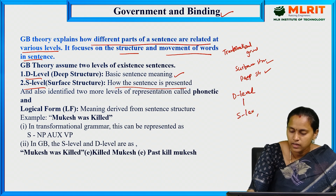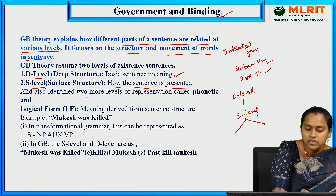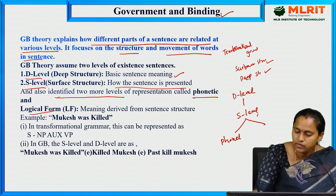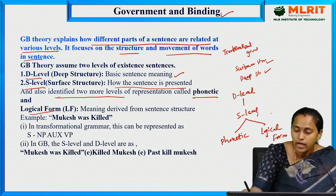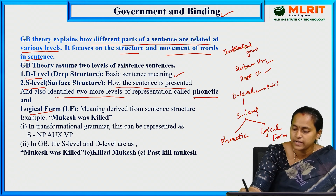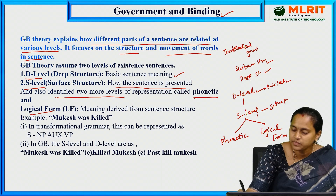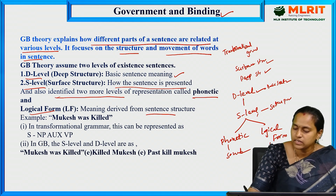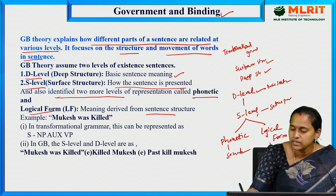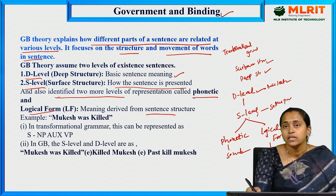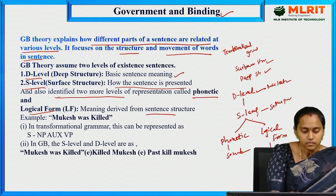D-level means basic sentence meaning; S-level means how the sentence is presented; phonetic means sound; and logical form means meaning derived from the sentence structure. This is the hierarchical representation of Government and Binding Theory. Take the example 'Mukesh was killed.' In transformational grammar, the sentence consists of a noun phrase, auxiliary, and verb phrase — where the noun phrase is Mukesh, auxiliary is 'was,' and verb is 'killed.'